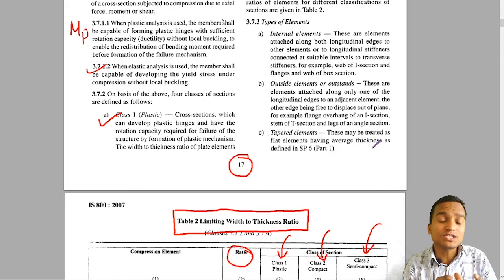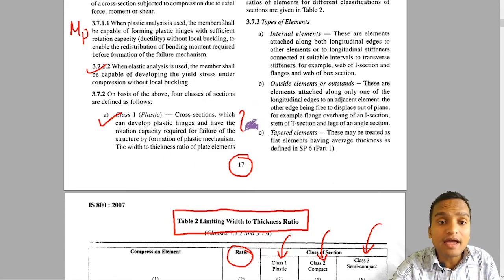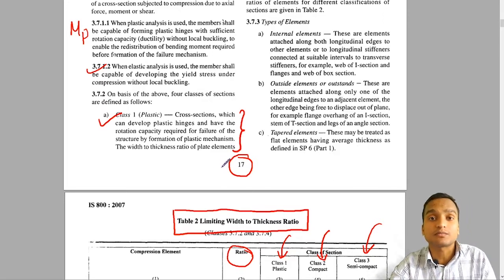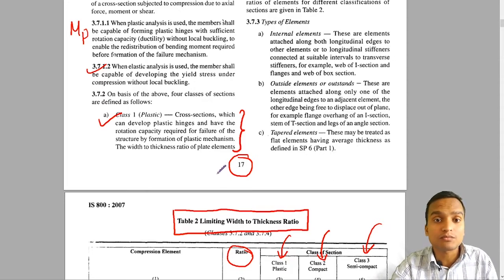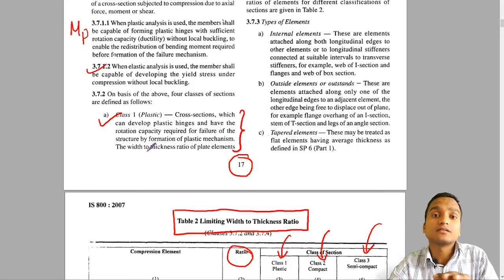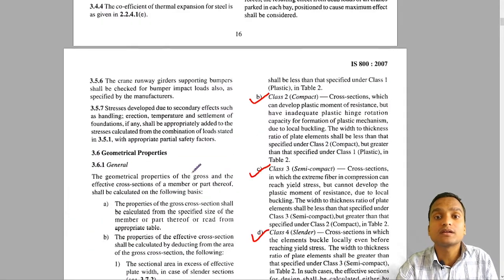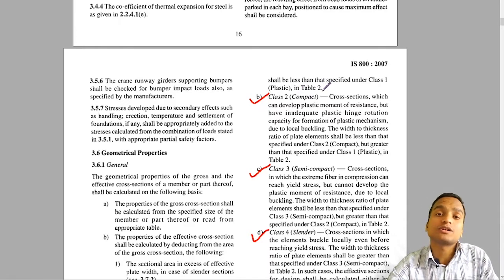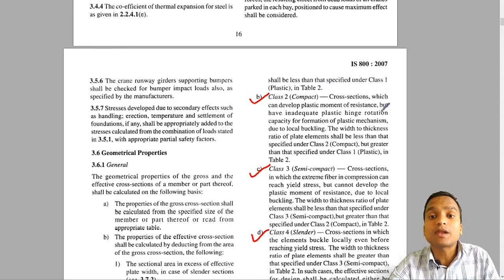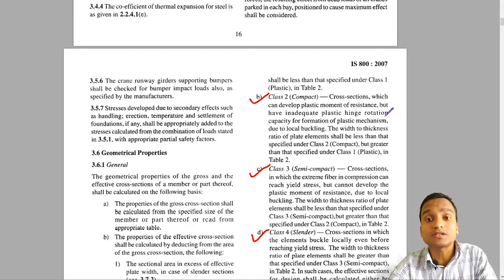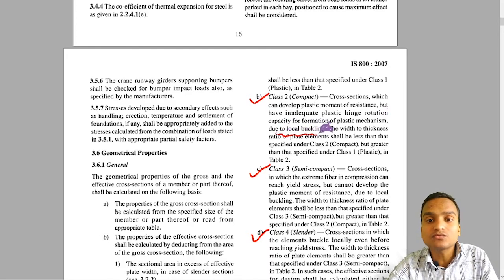Class 1 section is a cross-section that can develop plastic hinges and has the rotation capacity required for failure of the structure by formation of a plastic mechanism, without any chances of local buckling. The width-to-thickness ratio of plate elements shall be less than that specified under class 1 in Table 2. Class 2 compact sections can develop plastic moment of resistance but may not be able to develop the required number of plastic hinges due to certain local buckling — local buckling starts in class 2.